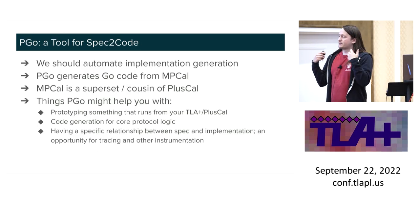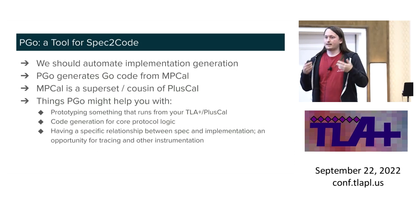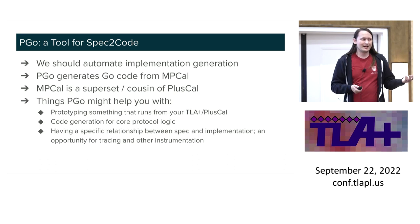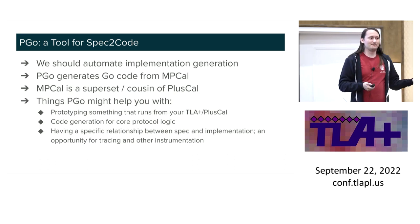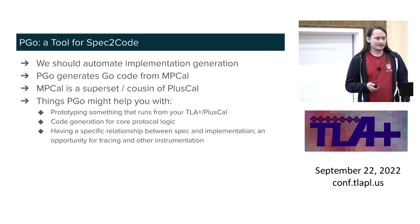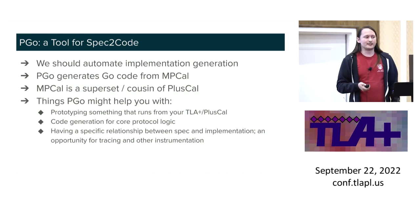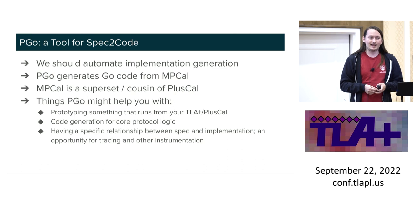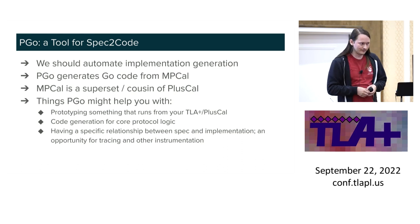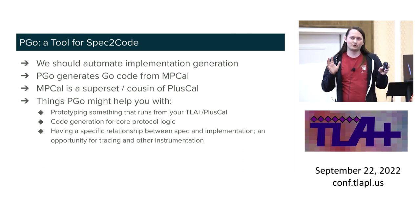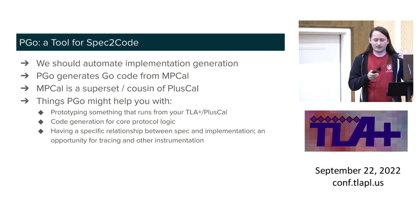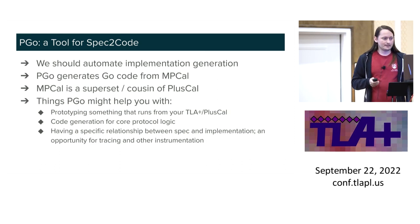With a decent amount of effort you can get around this, but you still have this kind of gap between your design and the implementation. This presentation is going the idealistic route: could we try mechanizing that gap? That's what PGO is basically. It generates Go code from a language called MPCal, which is kind of a superset and/or cousin of PlusCal.